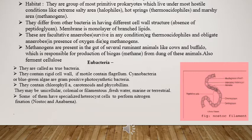The next category of Monera is eubacteria. These are the true bacteria, and in this category cyanobacteria are present, also known as blue-green algae. These blue-green algae are gram-positive photosynthetic bacteria — gram positive meaning they show red color in the presence of gram stain. They are photosynthetic because of the presence of chlorophyll. Other pigments present, besides chlorophyll, are carotenoids and phycobilins.